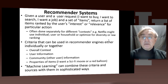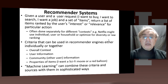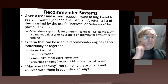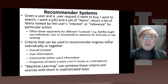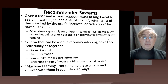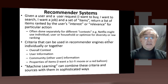Now we basically define the recommender system. We have a user and a user request: I want to buy, I want to search, I want a job, I want to make a friend online — and a set of items: websites, friends, jobs, books to buy. The recommender system is meant to return a list of these items, hopefully ranked so that the ones at the top are most likely to be interesting to the user. We sometimes use the word relevance — we want to sort the list by relevance. You'll find that when you have an option to search for books, you can search by relevance — which is what the site thinks you'll be interested in — or search by price, by date of issue, and so on.